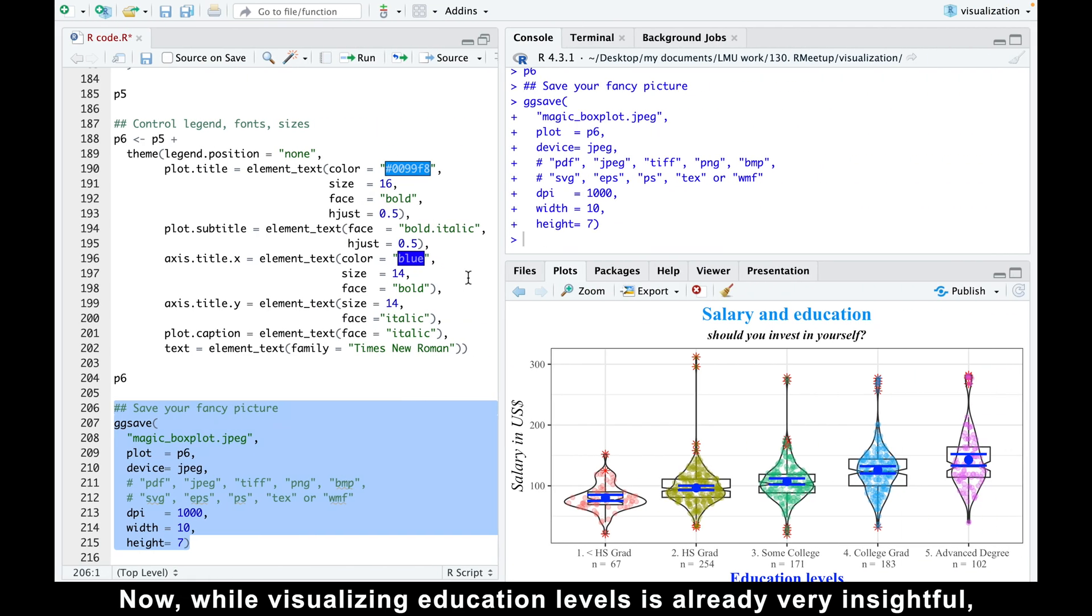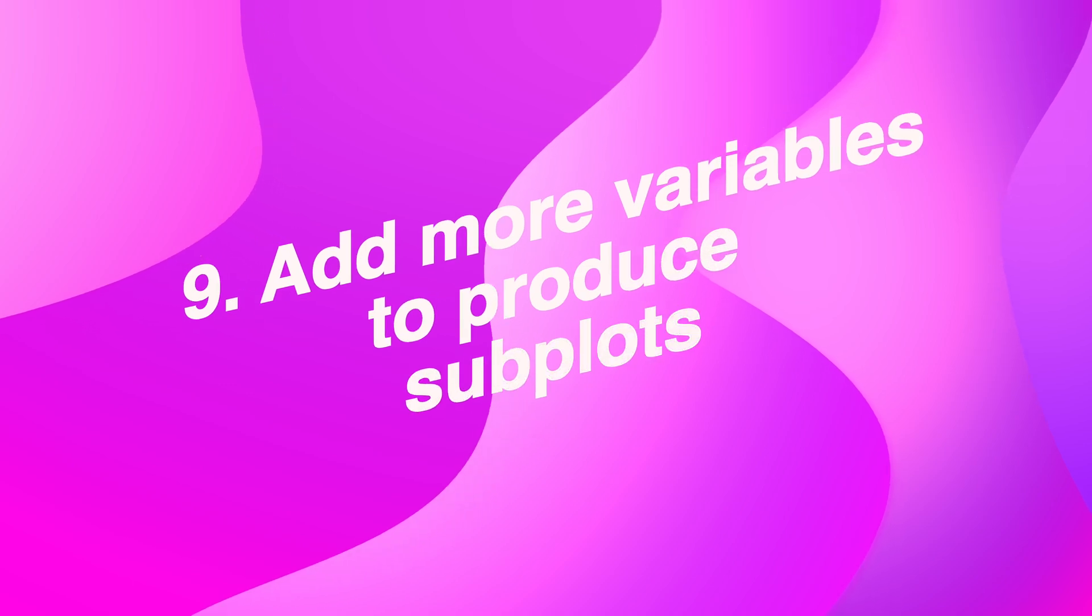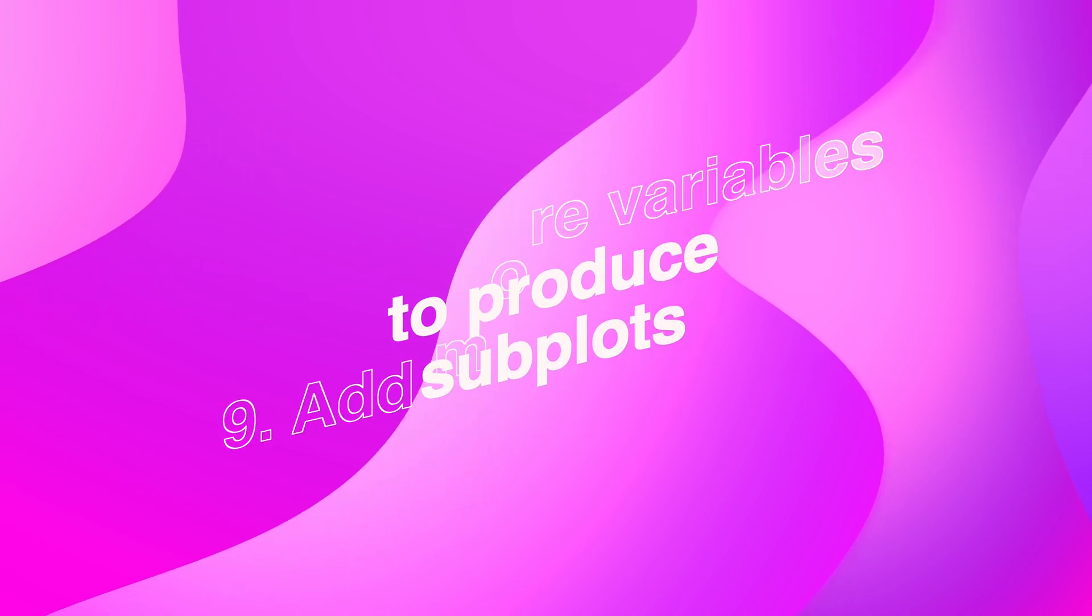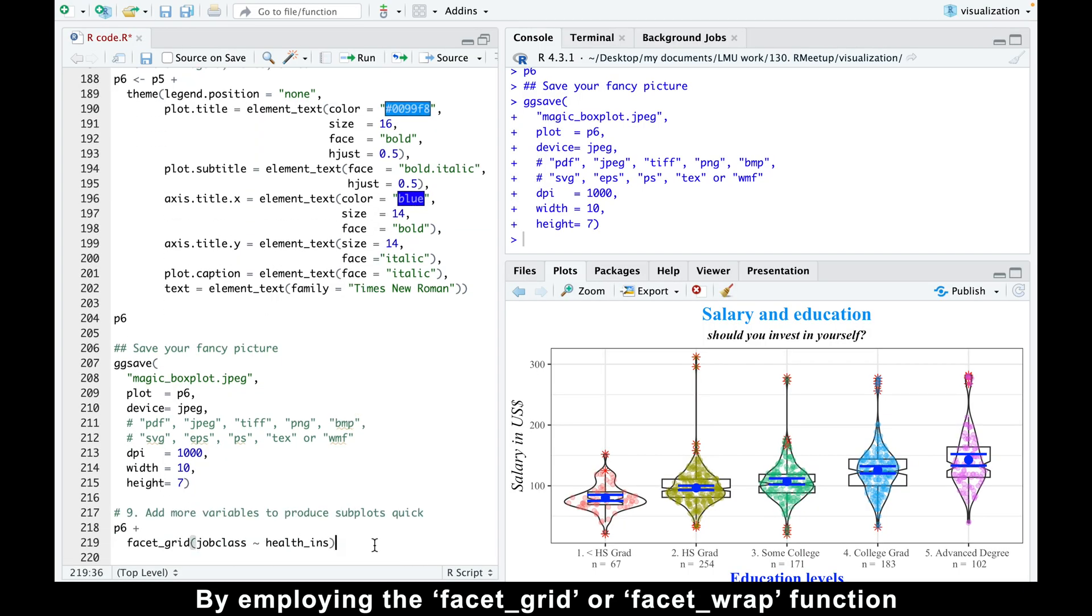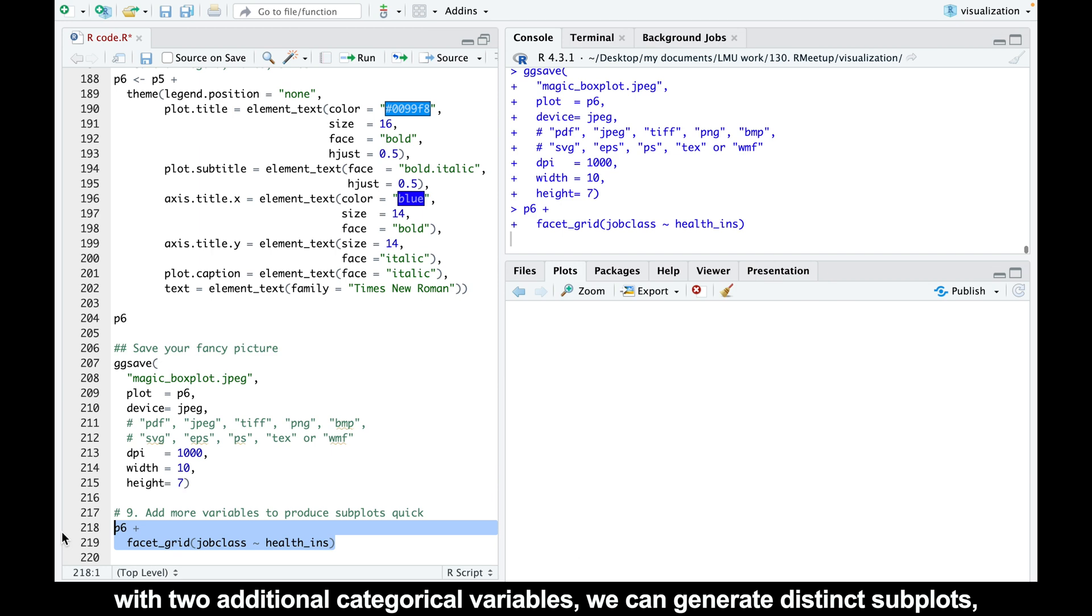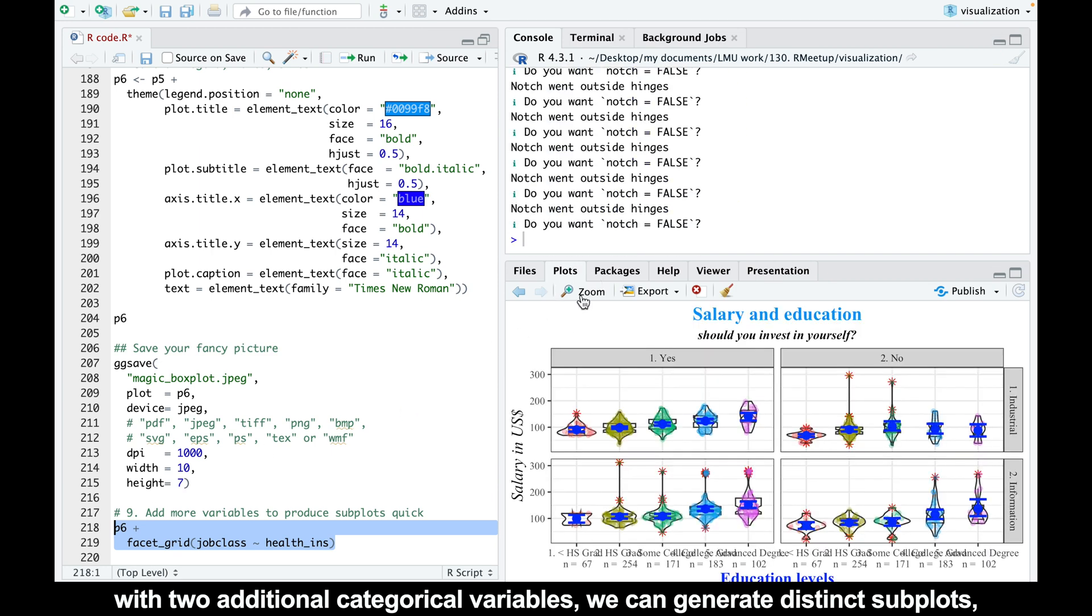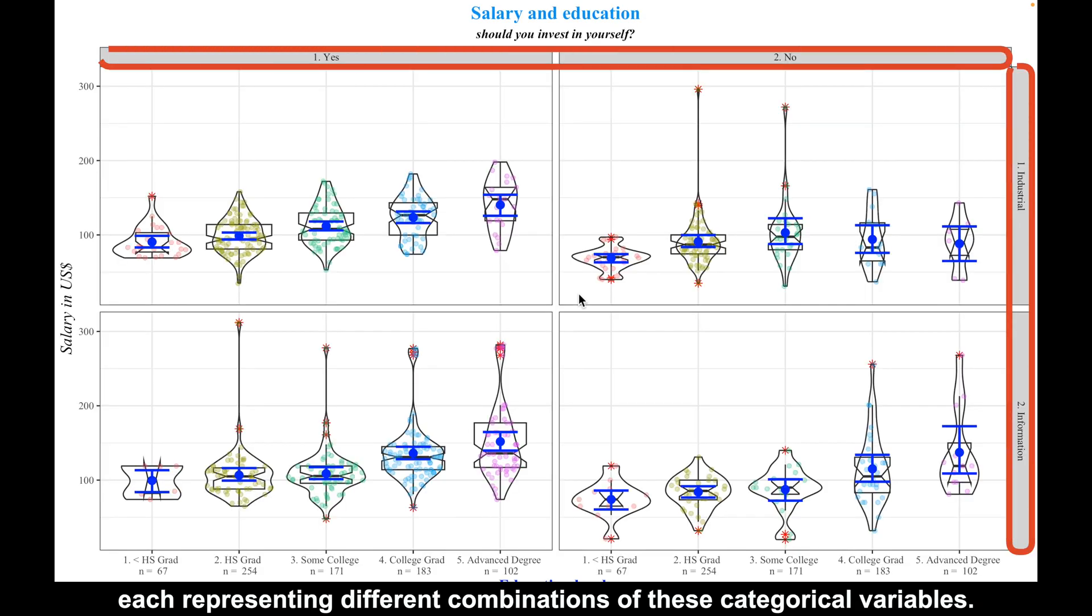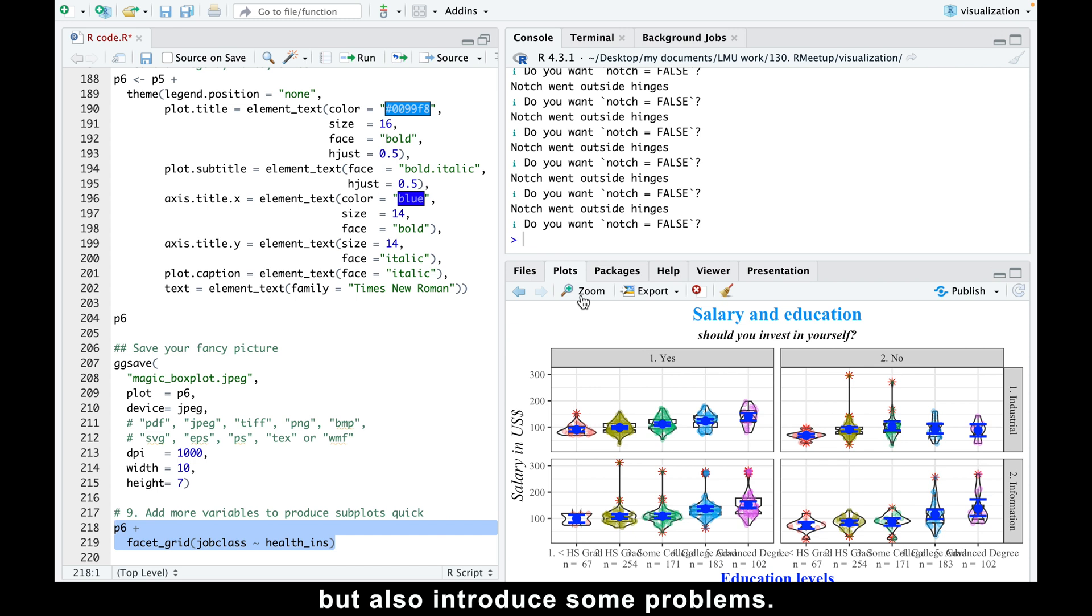Now, while visualizing education levels is already very insightful, we can go one step further and add two more variables to our plot. By employing the facet_grid or facet_wrap function with two additional categorical variables, we can generate distinct subplots, each representing different combinations of these categorical variables. These additions provide even more useful information, but also introduce some problems.